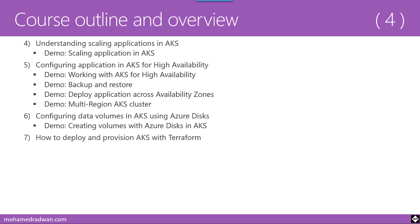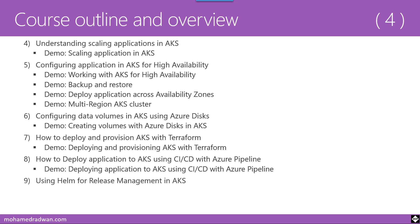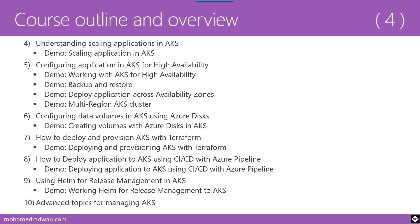Lesson Seven of Module Four covers How to Deploy and Provision AKS with Terraform — infrastructure as code — with a demo on provisioning AKS using Terraform. Lesson Eight covers How to Deploy Applications to AKS using CI/CD with Azure Pipelines, with an end-to-end demo on building and deploying to AKS. Lesson Nine covers Using Helm for Release Management in AKS, with a demo on Helm release management. Lesson Ten covers Advanced Topics for Managing AKS.